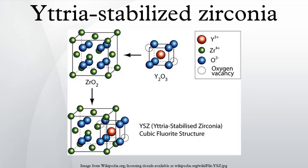Fully stabilized zirconia (ZrO2): FSZ — fully stabilized zirconia; CSZ — cubic stabilized zirconia; 8YSZ — with 8 mol% Y2O3, fully stabilized zirconia (ZrO2).